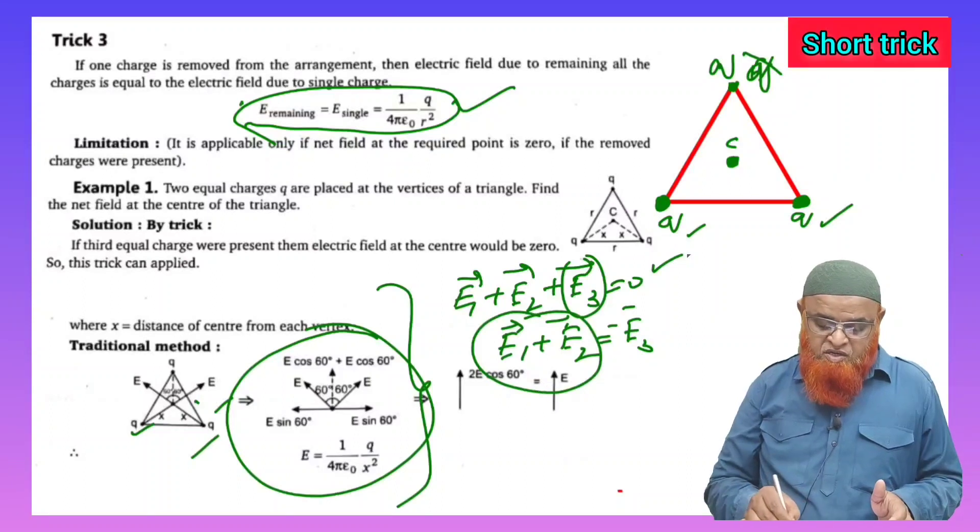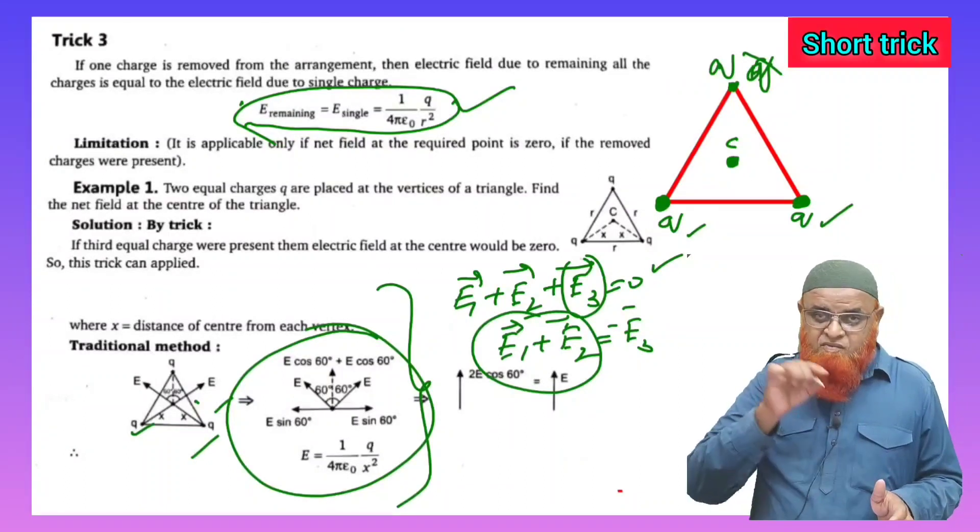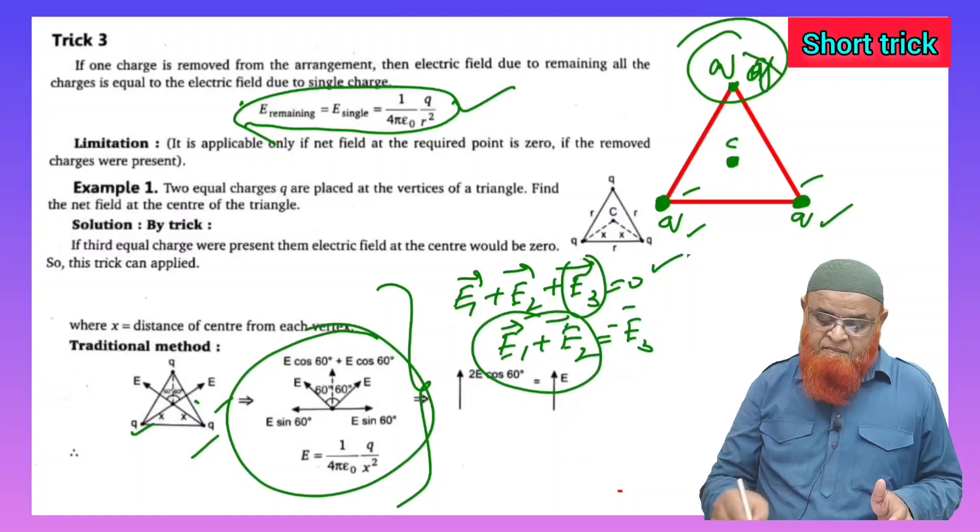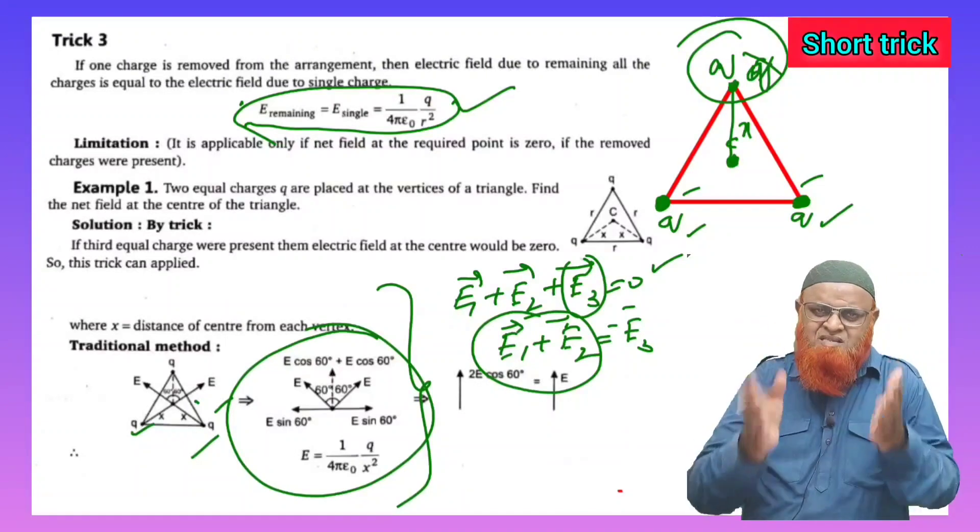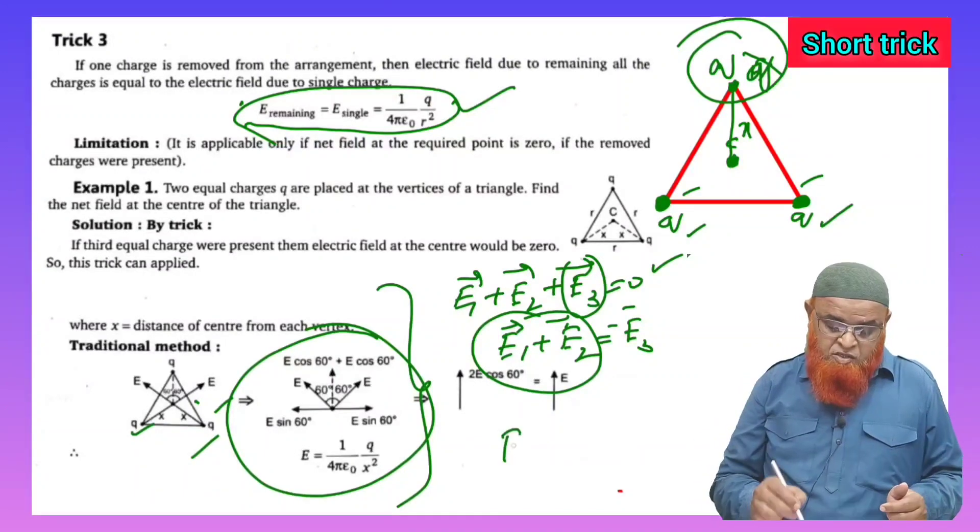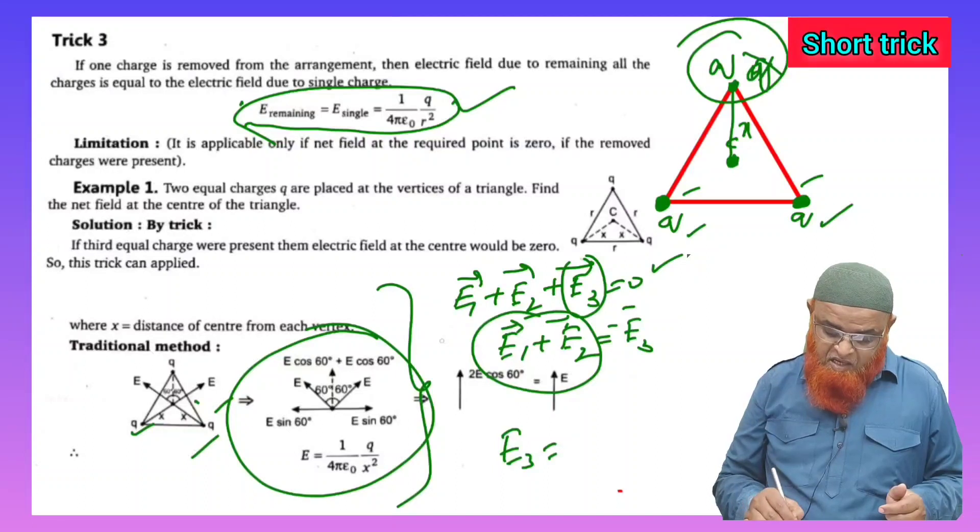So instead of finding electric field intensity because of these two charges, if you find out electric field intensity because of a single charge at this place which is at a distance x, then you will get the answer directly. That is the meaning here. So what I mean to say is, if you find out E3 directly, that will equal E1 + E2.